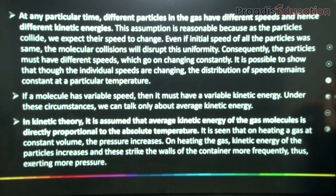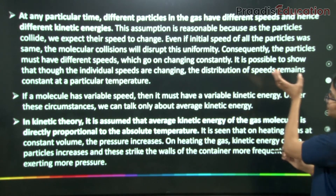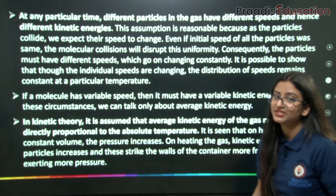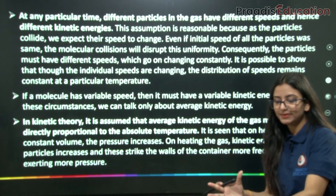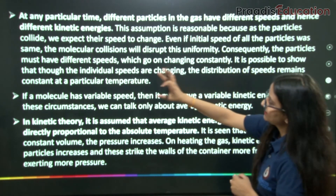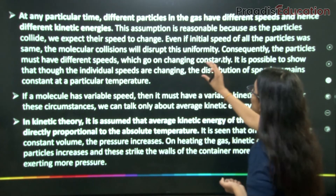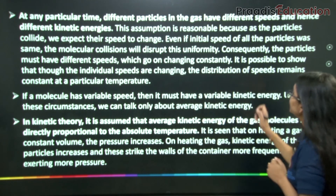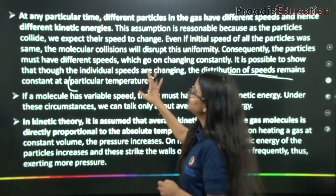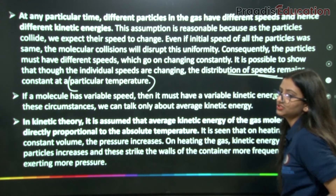Postulate 6: At any particular time, different particles in the gas have different speeds and hence different kinetic energies. As particles collide, their speeds change. Even if all particles initially had the same speed, molecular collisions would disrupt this uniformity. Though individual speeds keep changing, the distribution of speeds remains constant at a fixed temperature.